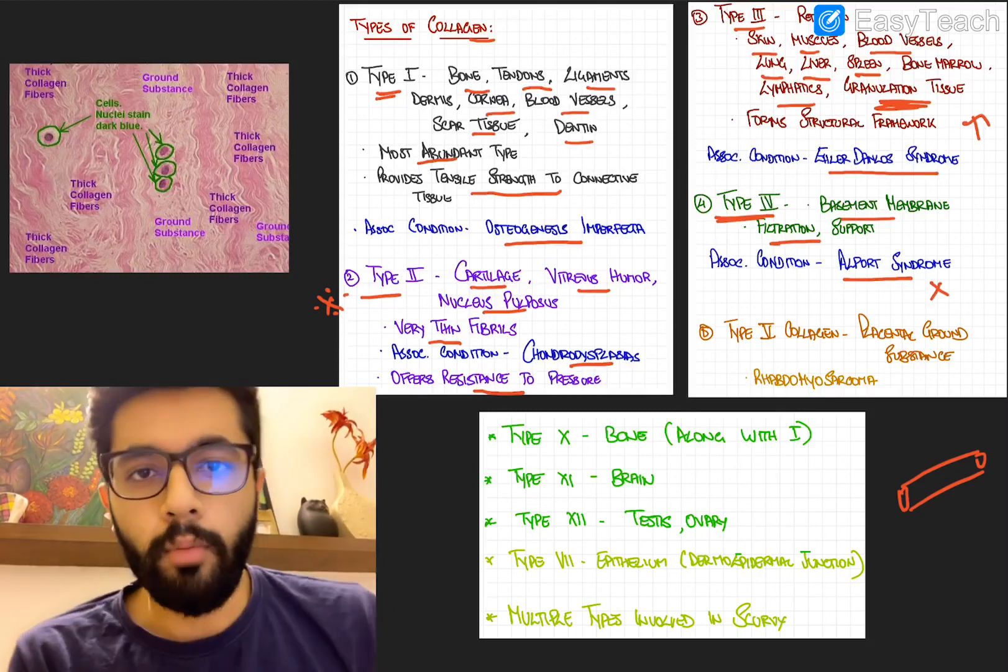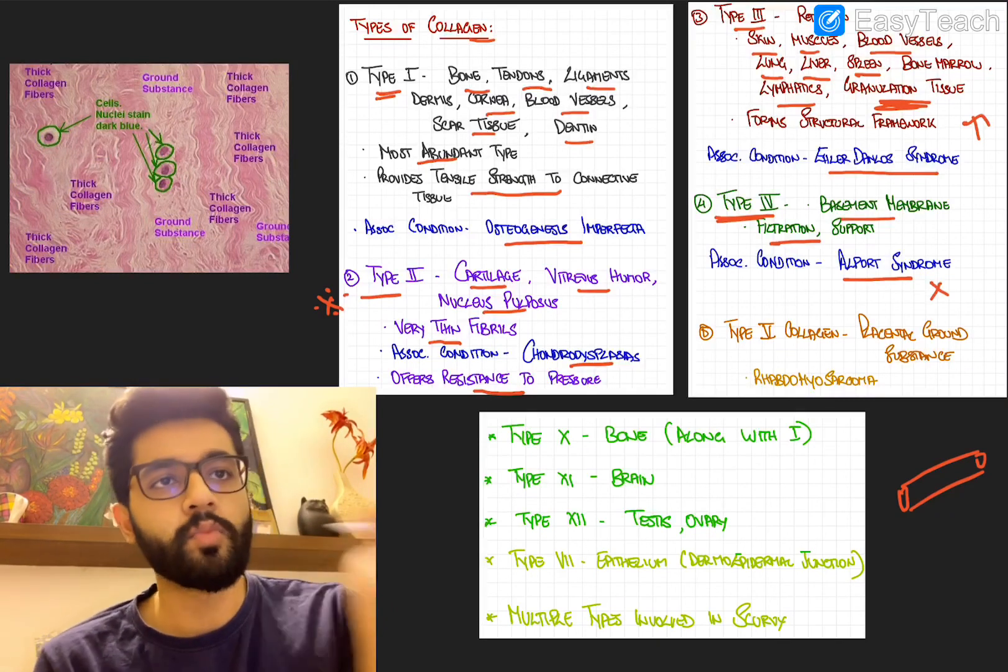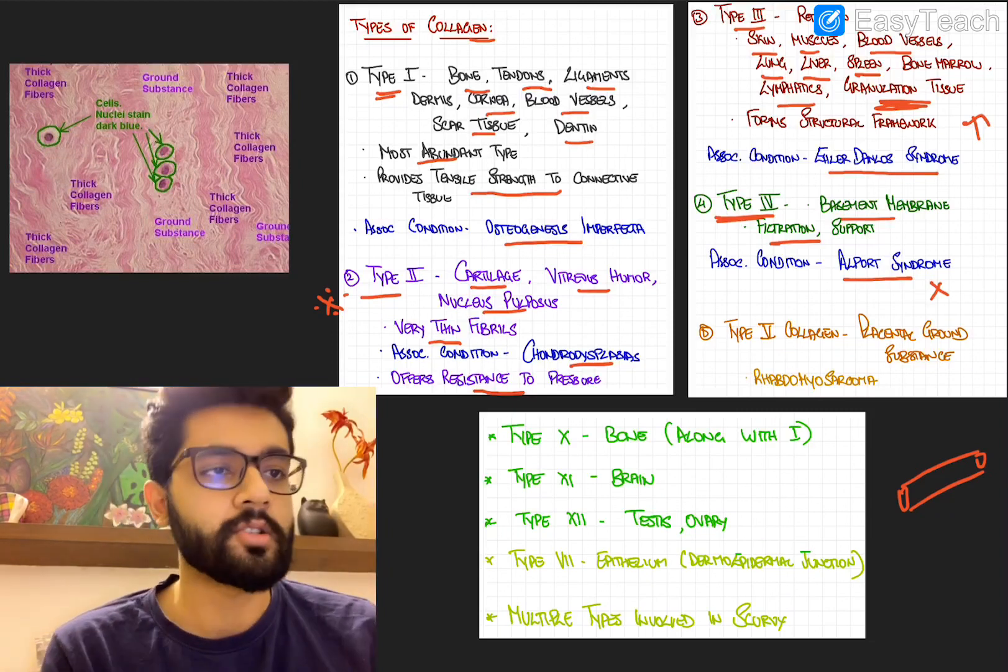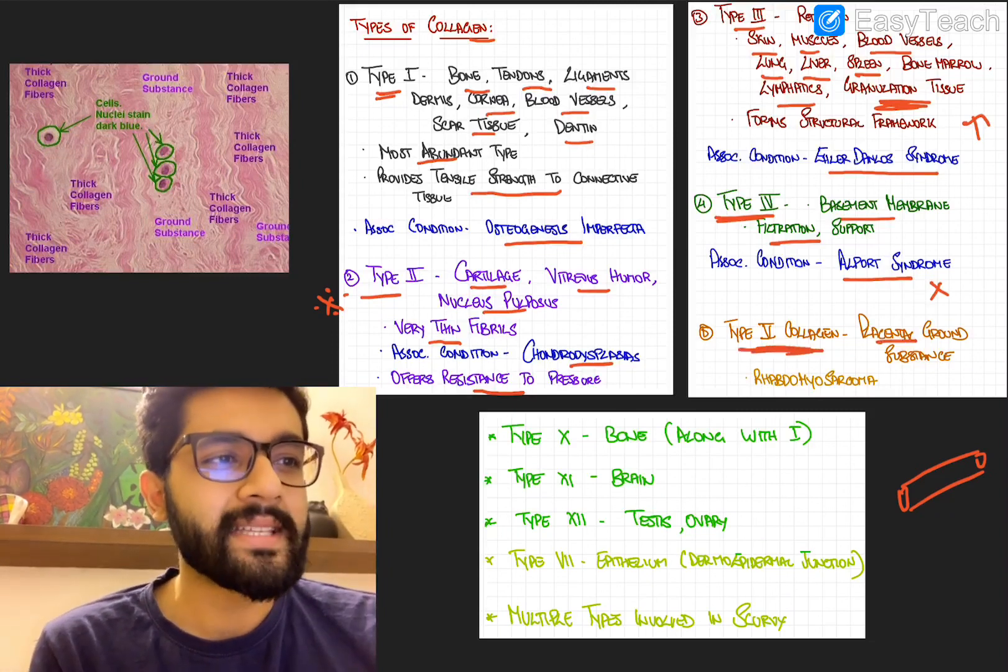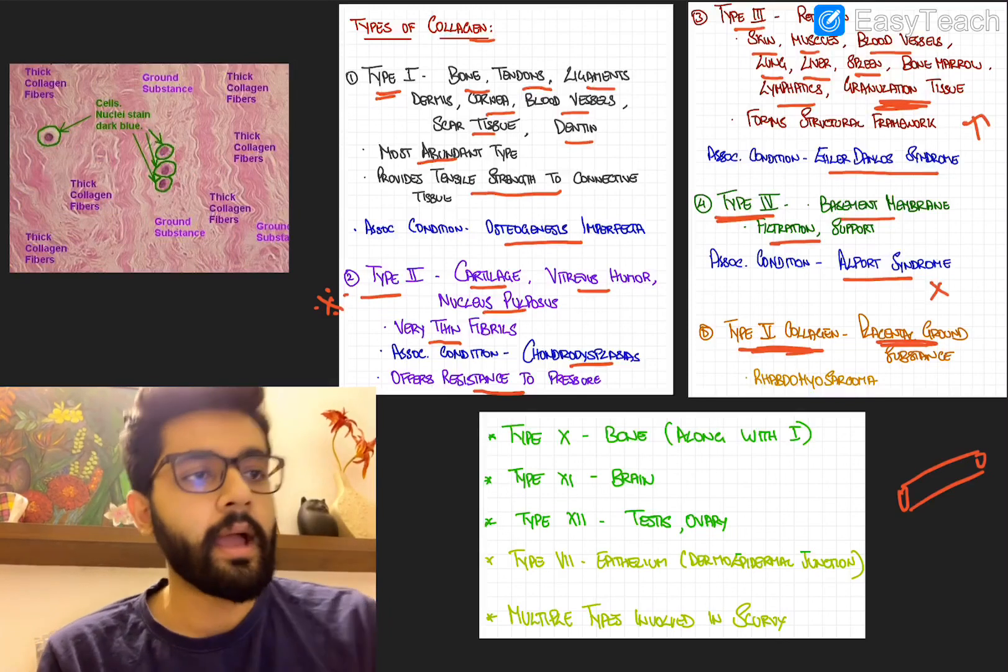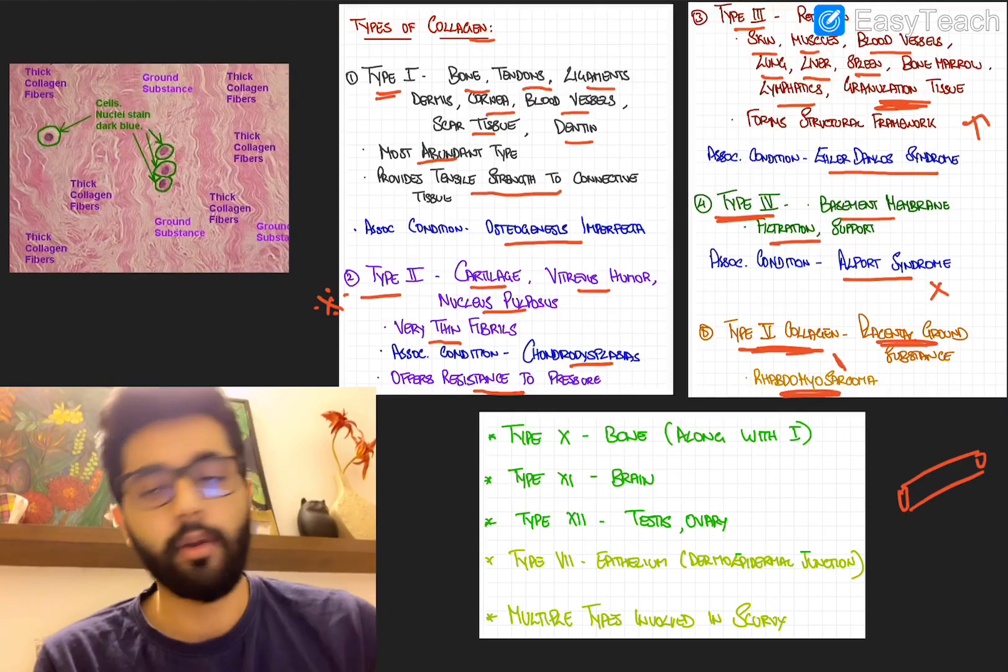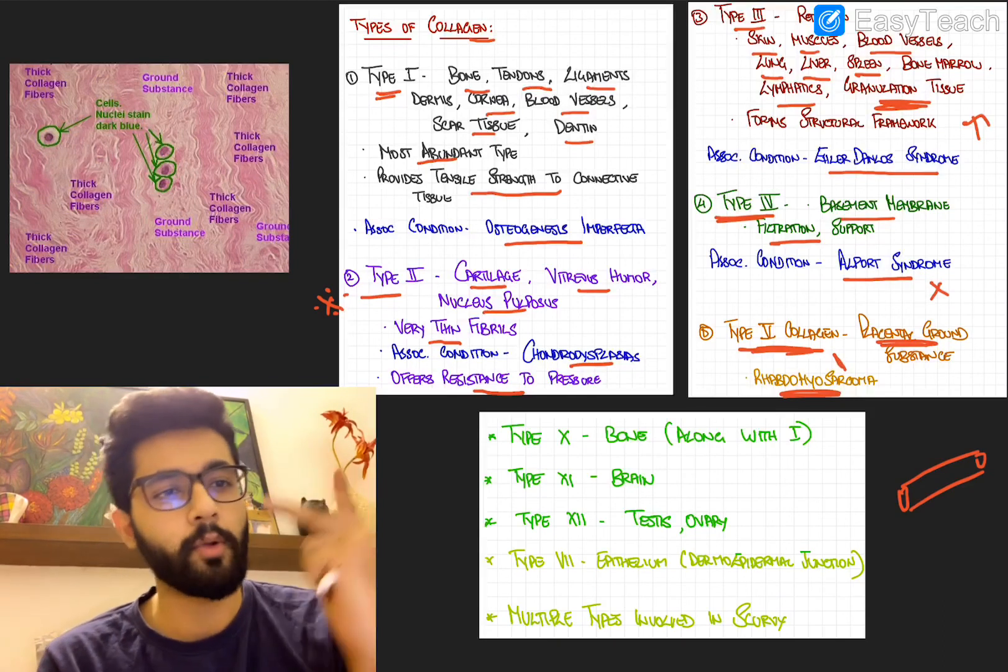Now we'll talk a little bit about the miscellaneous collagens. So these are the four most important types of collagen which you must know. Now we'll talk about the miscellaneous collagens. Type 5 collagen is seen in the placenta normally and also in a malignancy called rhabdomyosarcoma. So type 5 collagen, two places: placenta, rhabdomyosarcoma.